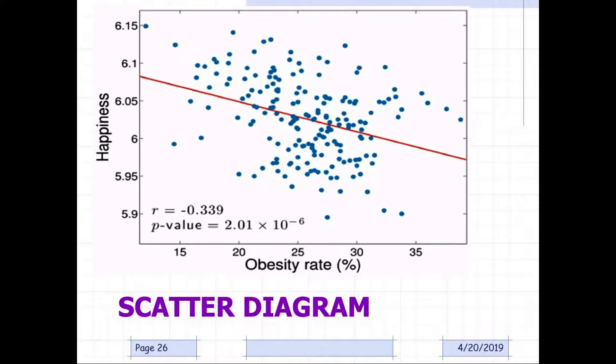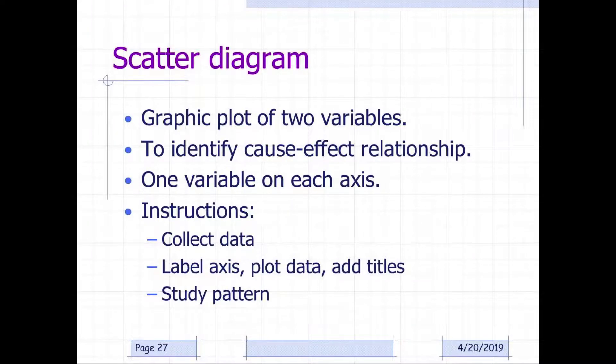And here's what a scatter diagram looks like. These aren't used too often. It's a graphic plot of two variables to identify the cause and effect relationship, one variable on each axis. The instructions are to collect the data, label the axis, plot it, and then add the titles, and then study the pattern.